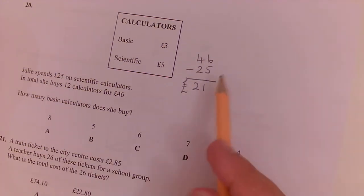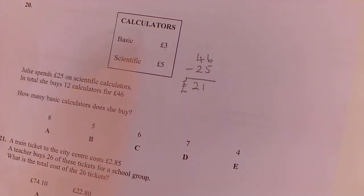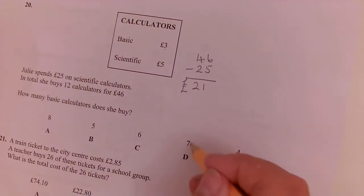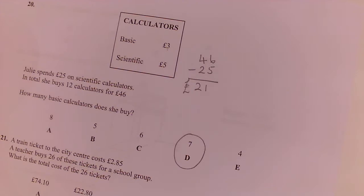Well, if she had £46 and she spent £25 on the posh ones, the scientific ones, that would leave her with £21. So she spent £21 on the basic calculators. Well, three times seven is 21. So she bought seven basic calculators.